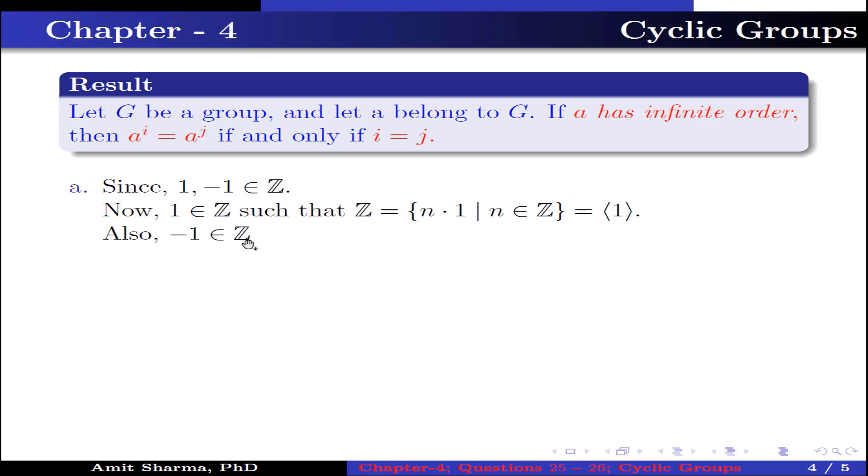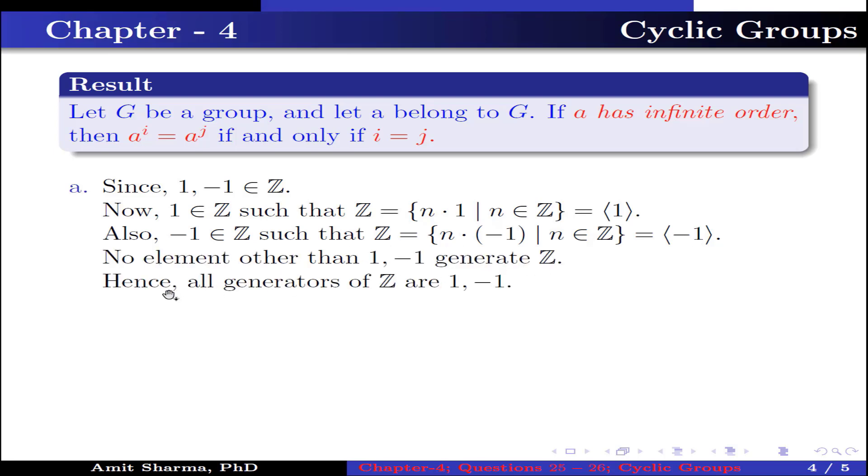Also, -1 belongs to Z such that Z contains elements of the type n·(-1) where n belongs to Z. This implies Z is generated by -1. No elements other than 1 and -1 generate Z, hence all the generators of Z are 1 and -1.